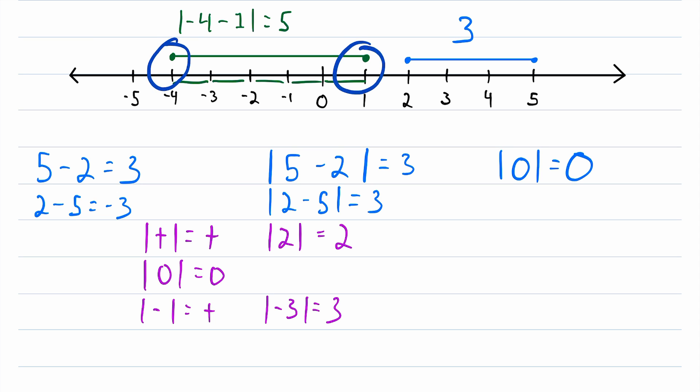So if you want to find the distance between two numbers, all you have to do is take the absolute value of their difference. Remember that difference refers to subtraction. And it doesn't matter what order we subtract the numbers in, because we're taking the absolute value. So subtract the numbers in whatever order you please, take the absolute value, that is your distance.